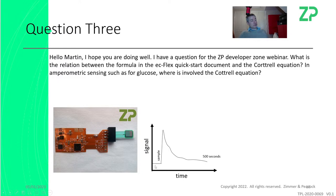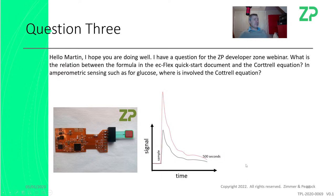The EZ-Flex signal versus time shows a Cottrell response: no signal until the sample goes on, the sample completes the circuit, the signal jumps up, but it's not stable — it's falling with time. If you add a higher concentration sample, you get a similar profile — the signal jumps up but again falls with time, though because it's at higher concentration the signal is higher.